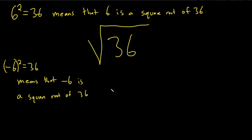So the number 36 actually has two square roots: 6 and negative 6. So we actually have two square roots here. So which one is it?